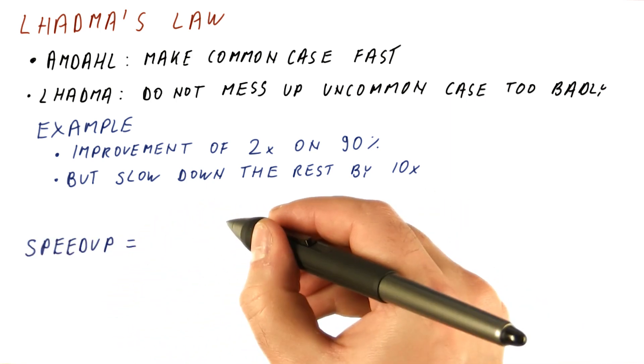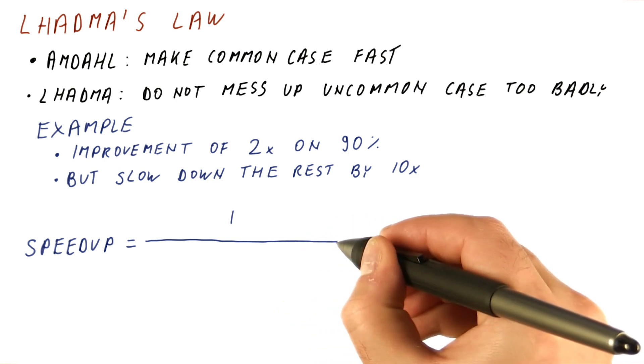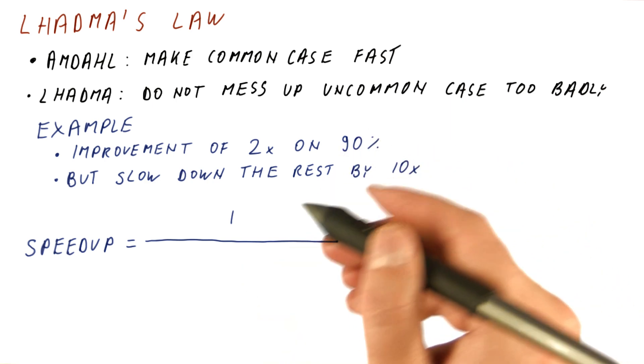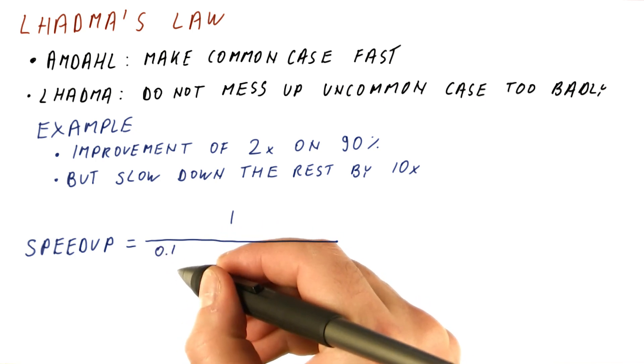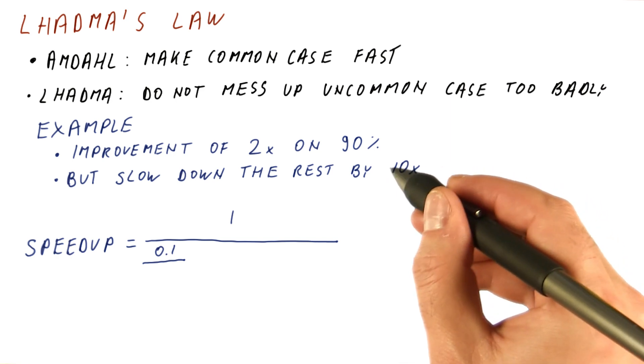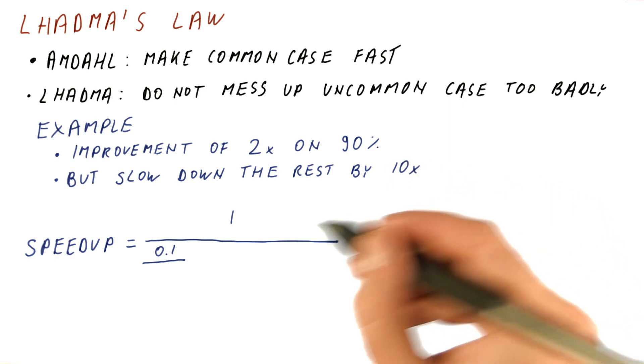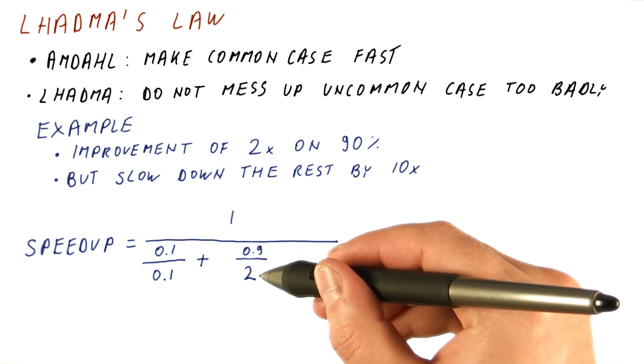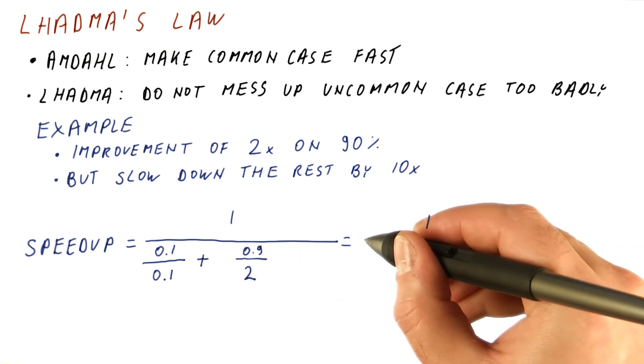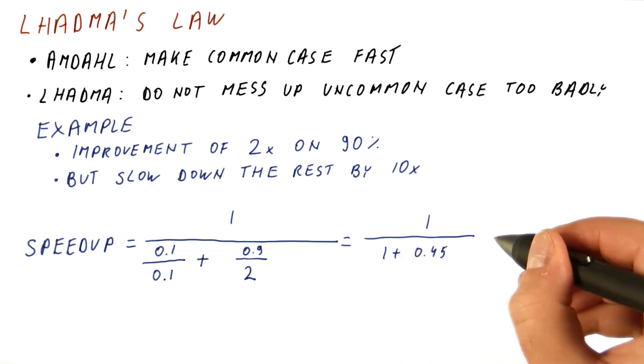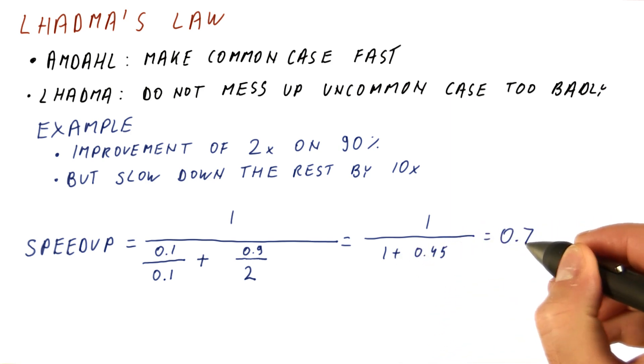The overall speedup can now be expressed as both of these are affected by different so-called improvements. We have one of them, the 10%, affected by a speedup of 0.1, because this is a 10 times slowdown. And the other, the 90%, are sped up by a factor of 2. We get 1 over 1 plus 0.45 equals 0.7.